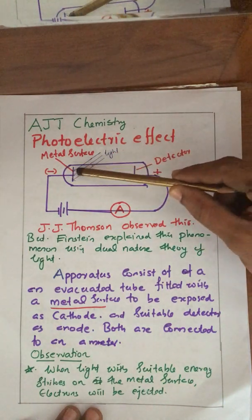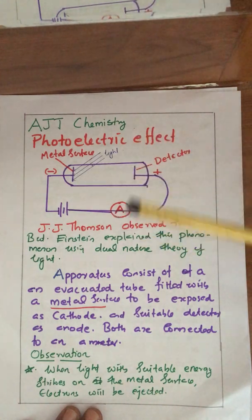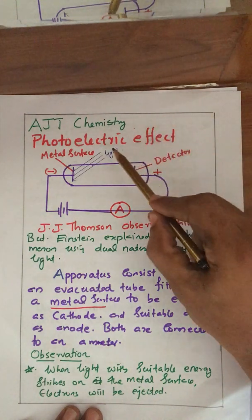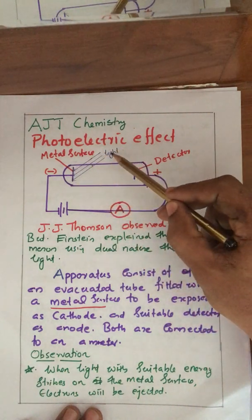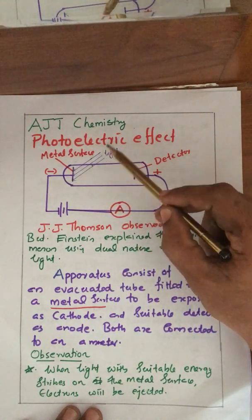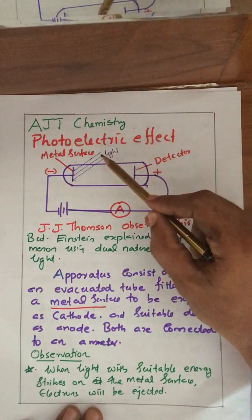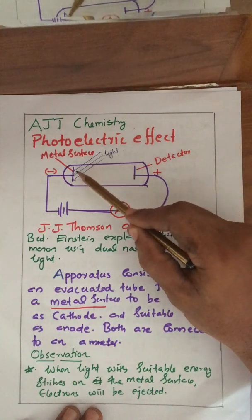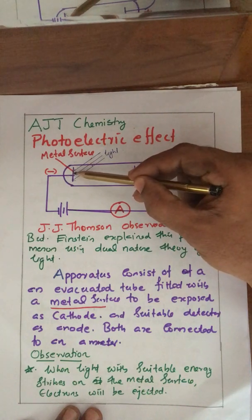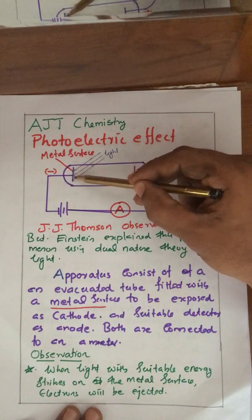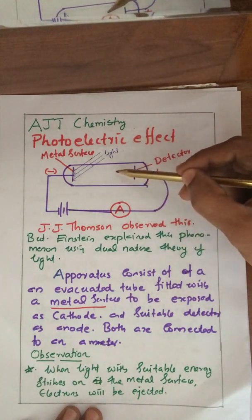It is a vacuum — there are no gases there, it is an insulated part, and there will be no current passing through the circuit. When light is incident on this metal surface and you apply light with a very low frequency, nothing will happen. If you increase the frequency or energy of the light, it is found that some electrons are ejected from this metal surface and these electrons move to the positive terminal of the electrode.